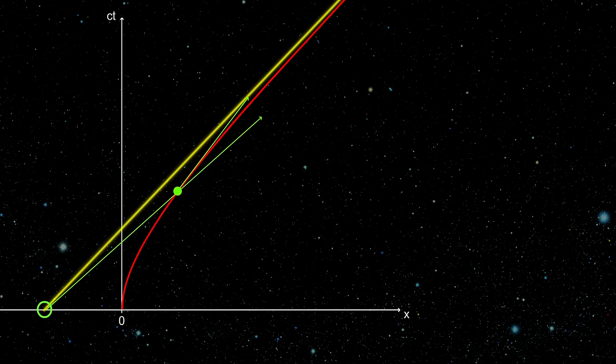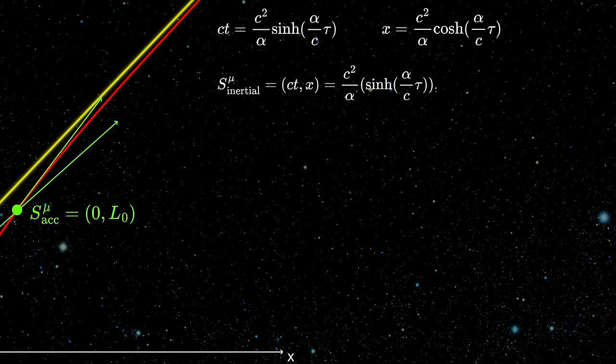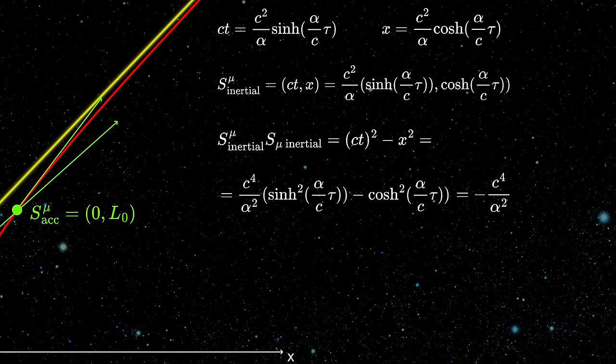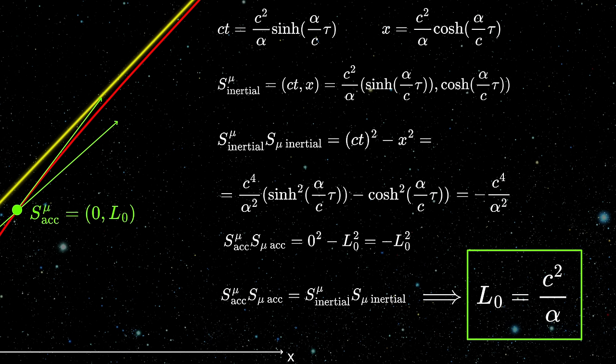Therefore, for accelerated observer, his position from the origin is always equal to the distance to the origin. If you calculate the magnitude of a position using these coordinates, you will find out that it's a constant. And therefore, the horizon is in a constant distance from the accelerated observer, which is given by this simple expression, which only depends on the speed of light and the magnitude of the proper acceleration.